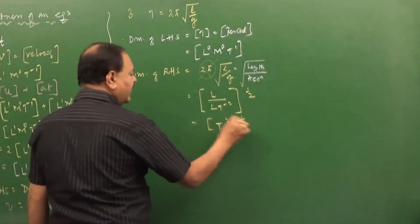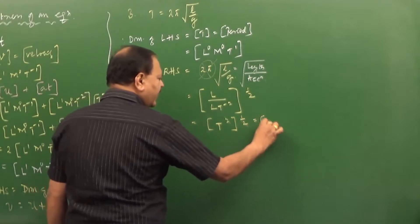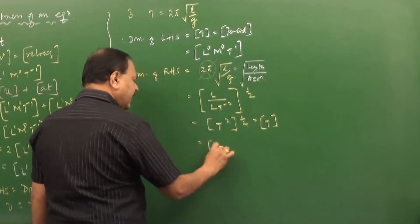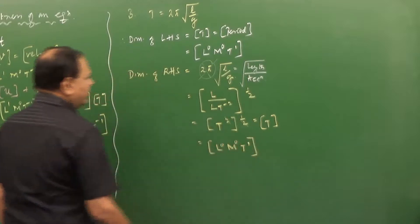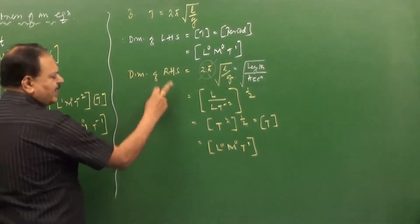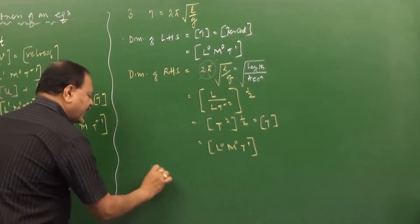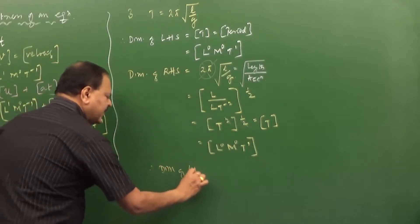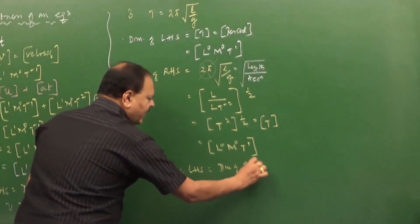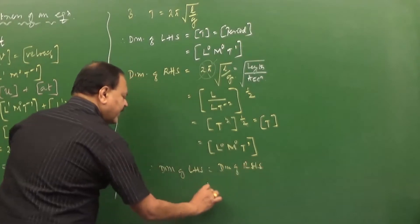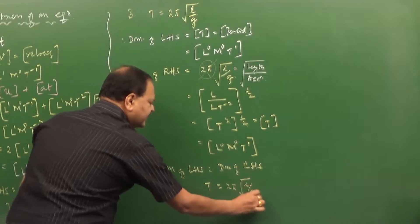Taking the root — power half — of L divided by LT⁻², the L cancels out. We are left with T⁻² to the power of negative half, which gives T¹. So only T remains. Length is 0, mass is 0, time is 1. Therefore the dimension of RHS is L⁰M⁰T¹. The dimension of LHS is equal to the dimension of RHS, so the equation T = 2π√(L/G) is dimensionally correct.